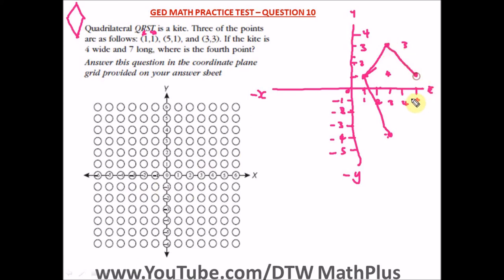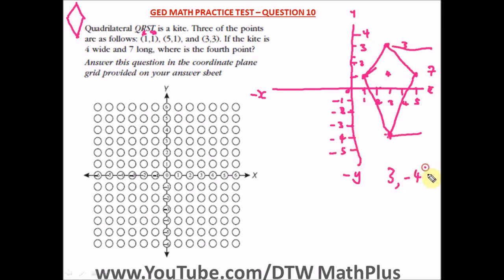Let's draw the kite out. From the top to the bottom is seven units long, and from side to side is four units wide. The coordinate of the fourth point is (3, negative 4). To mark this on the answer grid: x at three and y at negative four. That's our answer.